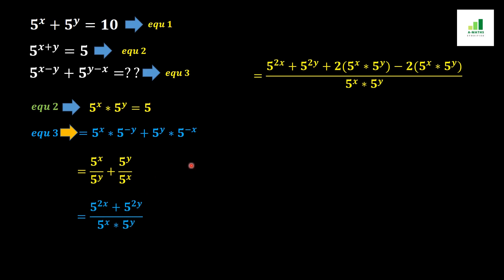In the next step, we add and subtract the value 2 · 5^x · 5^y inside the expression. This gives us 5^(2x) plus 5^(2y) plus 2 · 5^x · 5^y minus 2 · 5^x · 5^y, all over 5^x · 5^y. Since we both add and subtract these values ourselves, the overall expression remains unchanged.